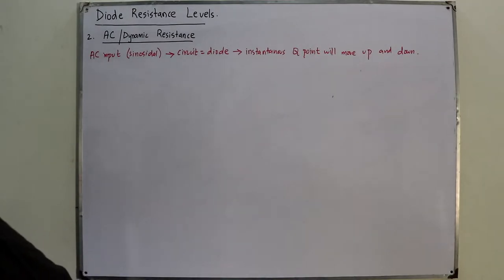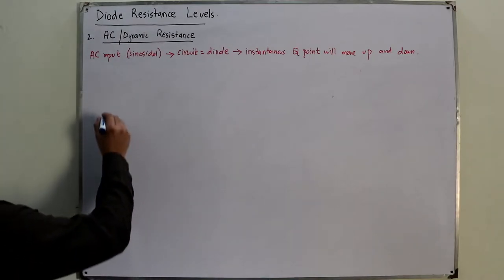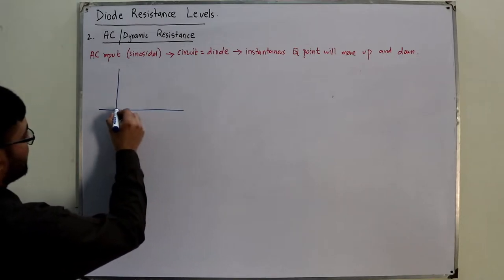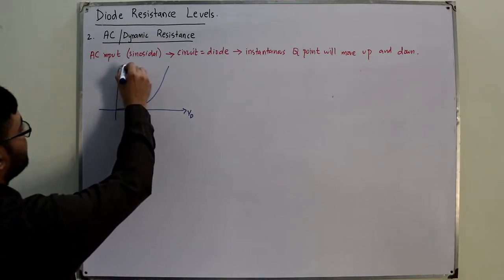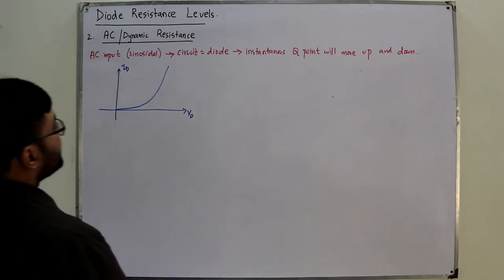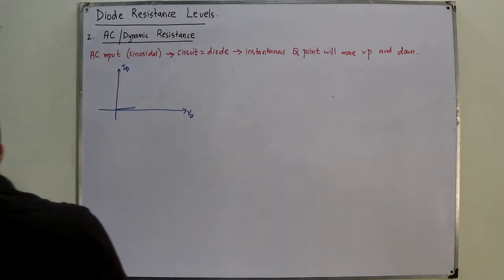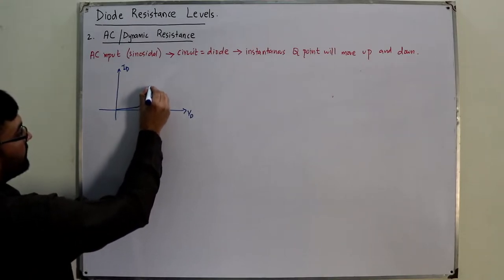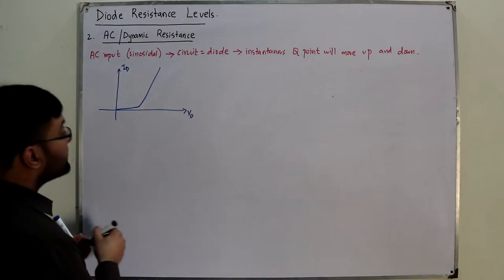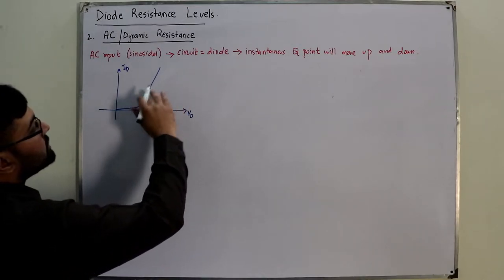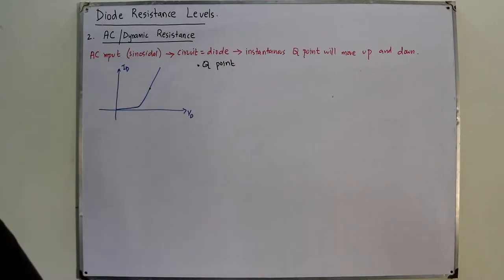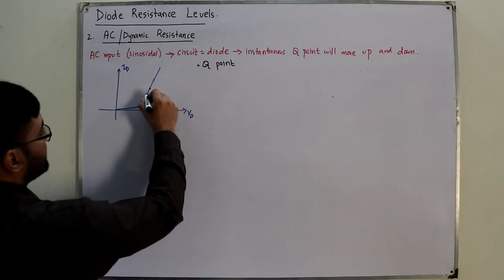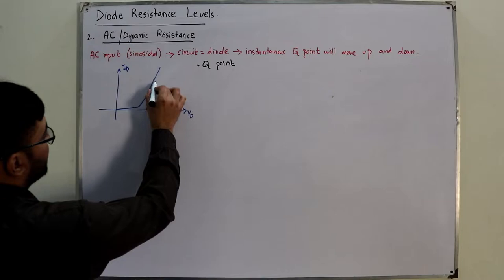Let me show you on the diode characteristics curve. You take a point — this is the Q point of the circuit, the initial Q point. When the input changes, the operating point moves. Let's say it moves to here and to here — I take these three points.